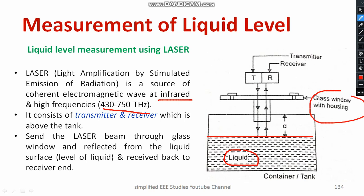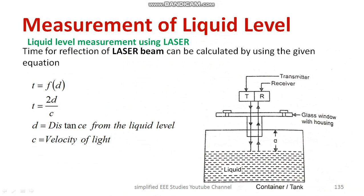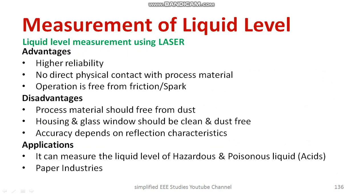There is a glass window. The laser beam is sent through the glass window, reflected from the liquid surface, and received back at the receiver end. Here we are using the principle of reflection. The time is a function of the distance d, where d is the distance between the upper layer of the tank and the standard height of the liquid. The formula is: time = 2d / c, where c is the velocity of light. So time can be computed, and with respect to the time you can determine the liquid level.